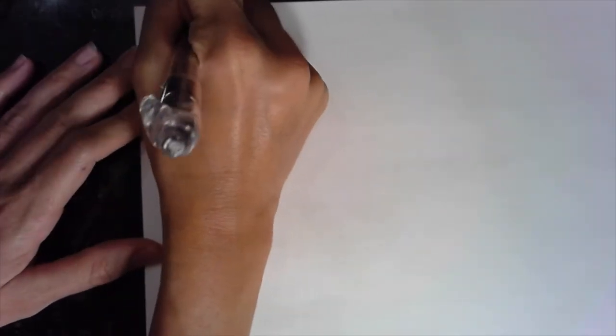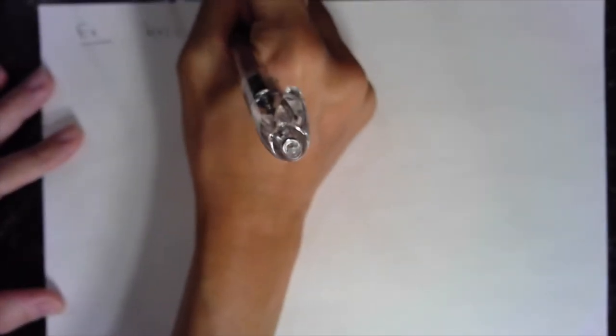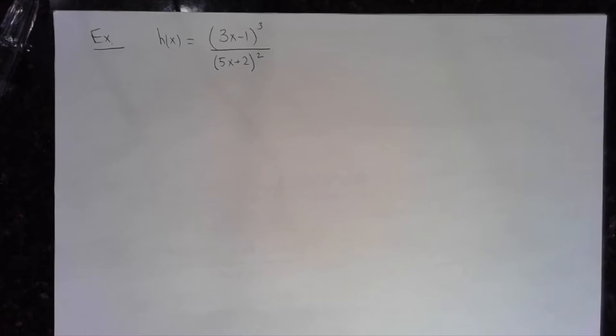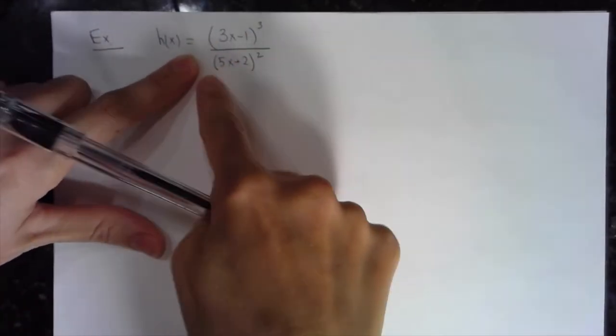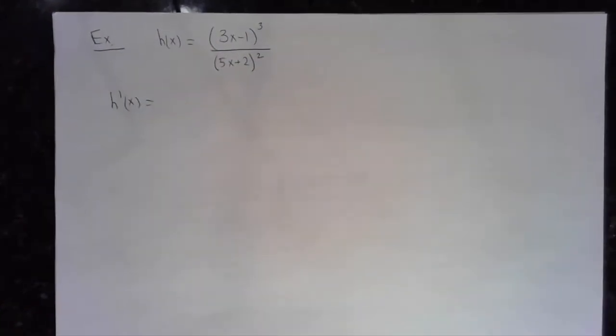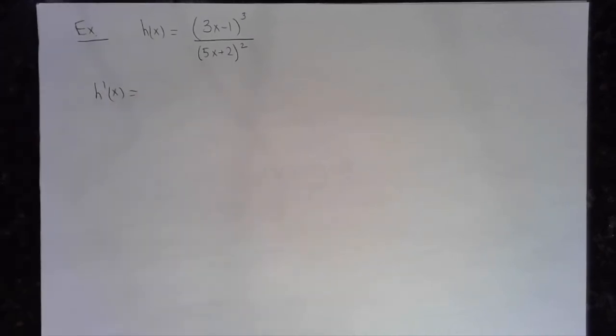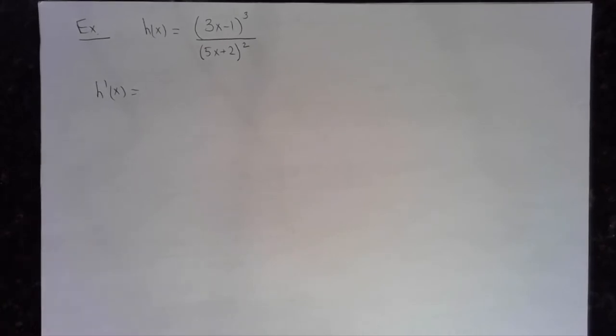That was one example with one chain rule. Now I'll do one more example with two chain rules. Example 2: h of x equals (3x minus 1) to the third divided by (5x plus 2) to the second. It's obviously a quotient, and it won't simplify before differentiating, so I have to apply the quotient rule with a chain rule for both the numerator and the denominator.